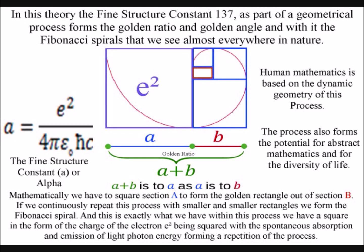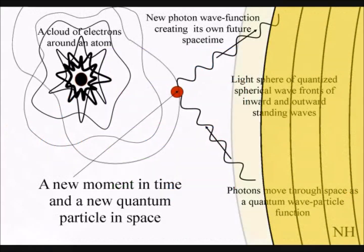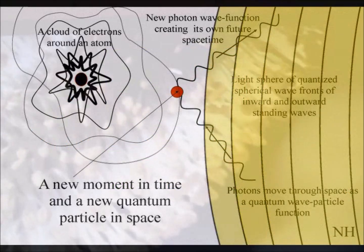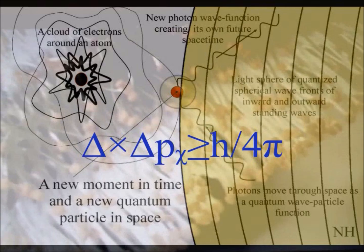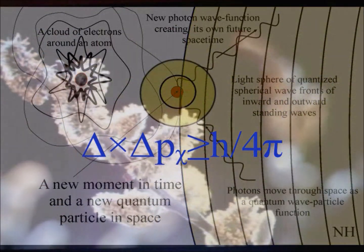And this is exactly what we have within this process. We have a square in the form of the charge of the electron being squared, with the spontaneous absorption and emission of light photon energy forming a repetition of the process.